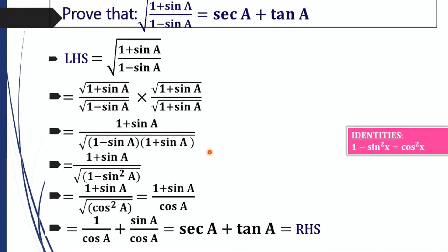We have to remember to multiply numerator and denominator by square root of (1 plus sin A). If we had used square root of (1 minus sin A) instead, we would get cos A over (1 plus sin A), and it won't be as easy to reach the RHS.